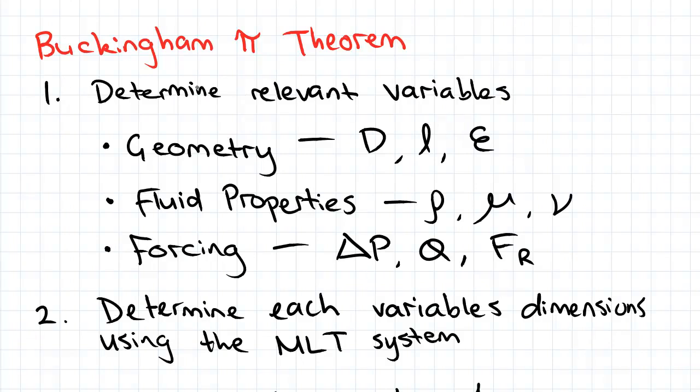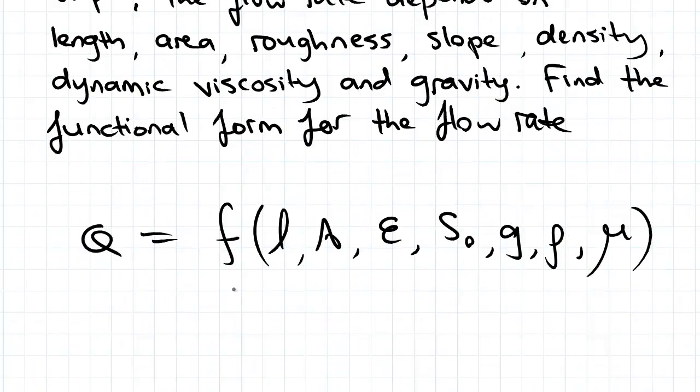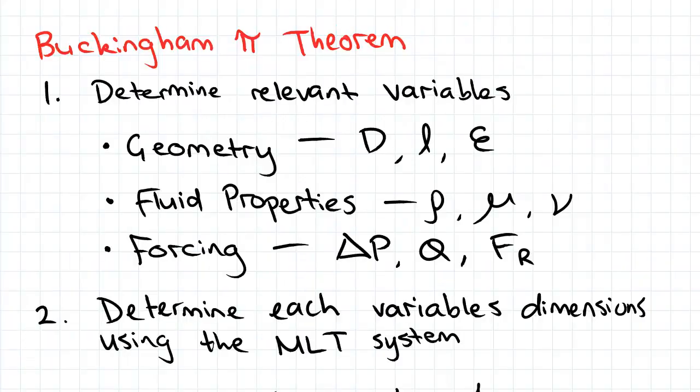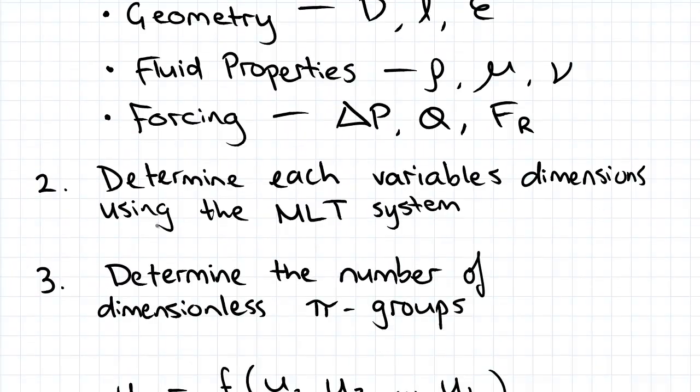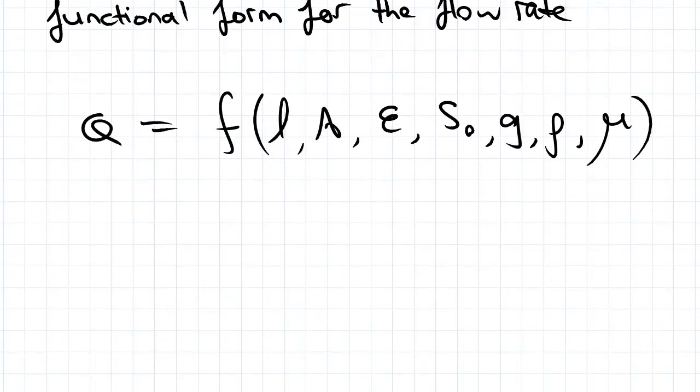Since it was given in the question we can skip that. We know all our variables, we know the form of our function is there. So next we determine each variable's dimensions using the MLT system. That's step two.